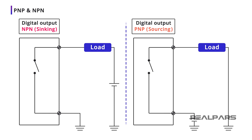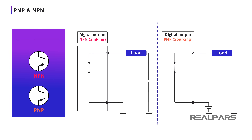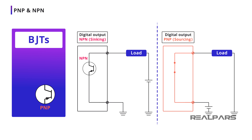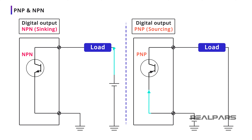Why are the names PNP and NPN used? Whether it's sinking or sourcing, an output module must act as a closed switch to complete the circuit. In many output modules, the actual switching is performed by bipolar junction transistors, or BJTs. In a sinking module, the transistor is an NPN. In a sourcing module, the transistor is a PNP. The current flows into a sinking module, and out of a sourcing module.